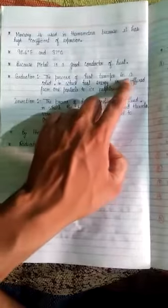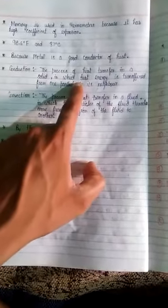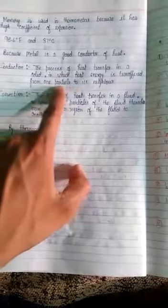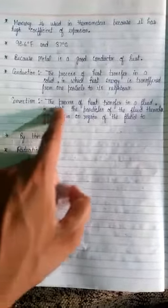Next question is define conduction and convection. Now conduction is the process of heat transfer in a solid in which heat energy is transferred from one particle to its neighbor.